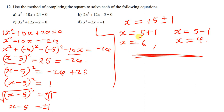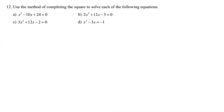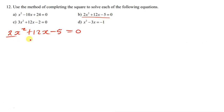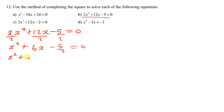The next question has a coefficient: 2x squared plus 12x minus 5 equals zero. The first step is to divide everything by 2, giving x squared plus 6x minus 5 over 2 equals zero. We then take 5 over 2 to the other side, leaving x squared plus 6x equals 5 over 2.